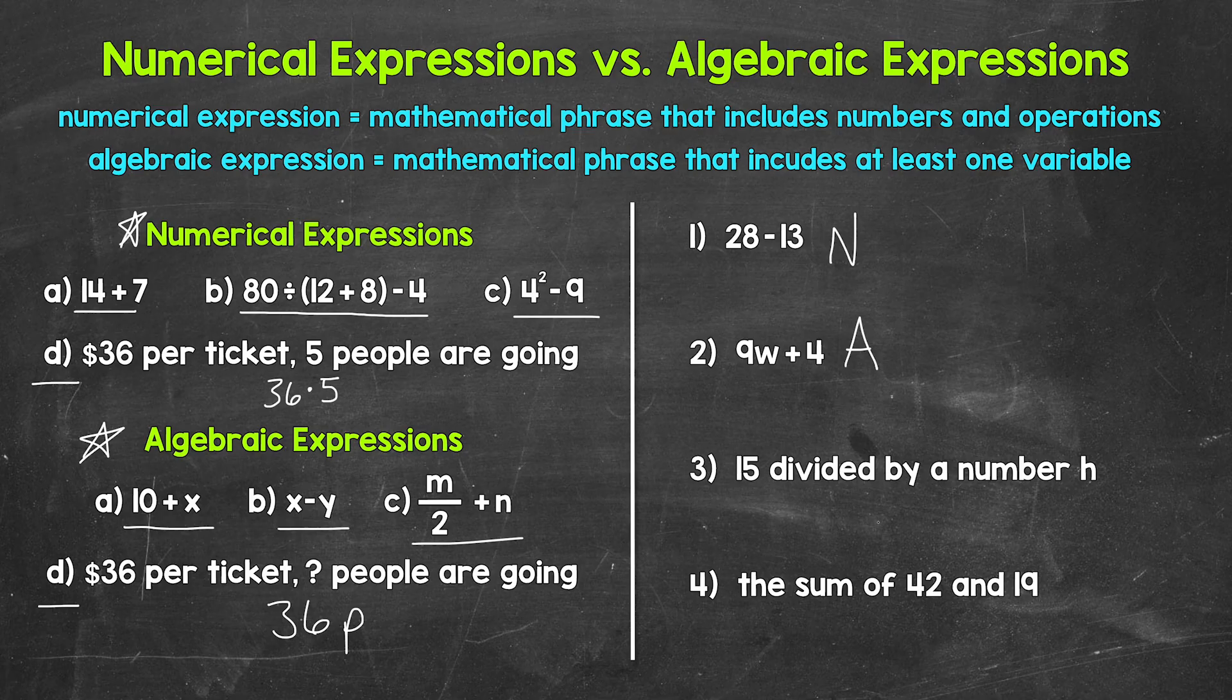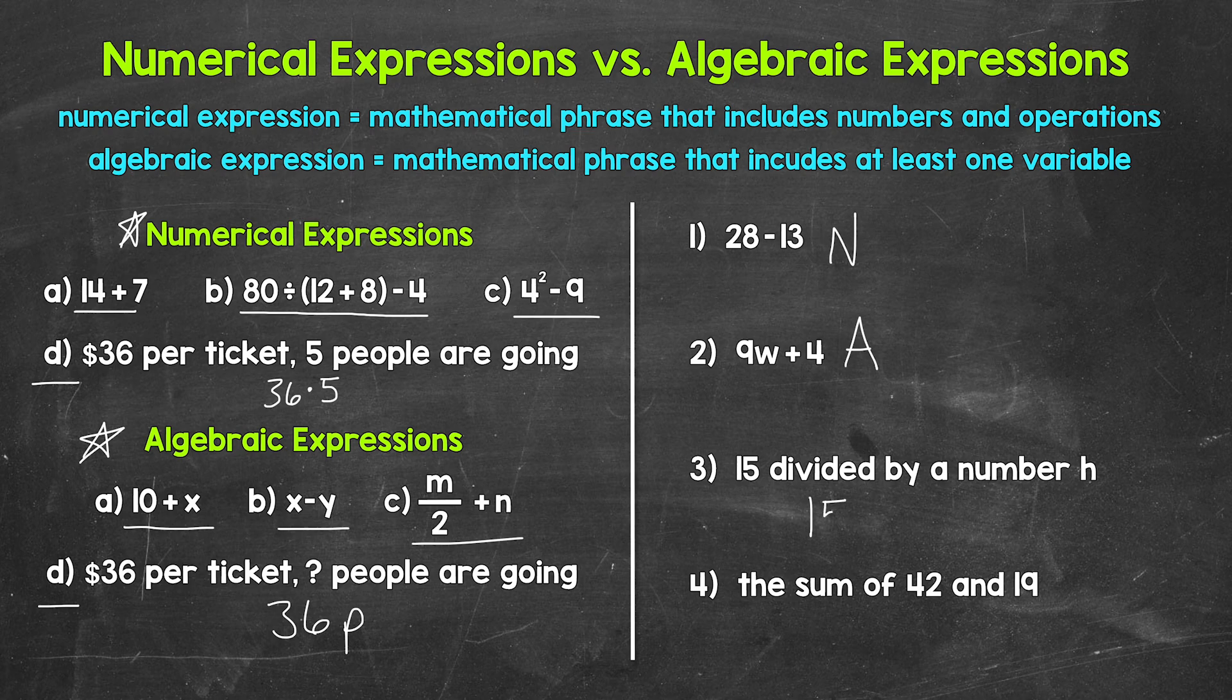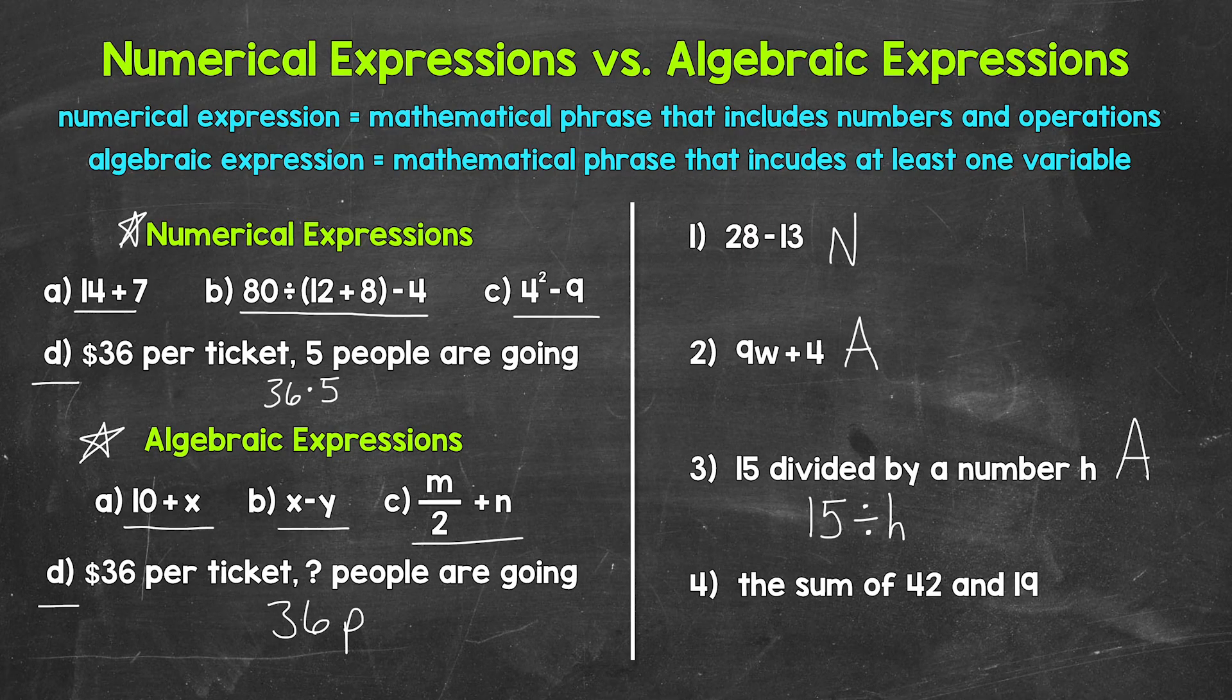Next, for number 3, we have a word phrase here that we can rewrite as an expression. So we have 15 divided by a number h. We have a variable, an unknown. We don't know what h equals. So this is going to be algebraic. And it looks like this, 15 divided by h. That's the expression. And again, this is algebraic because we have a variable.